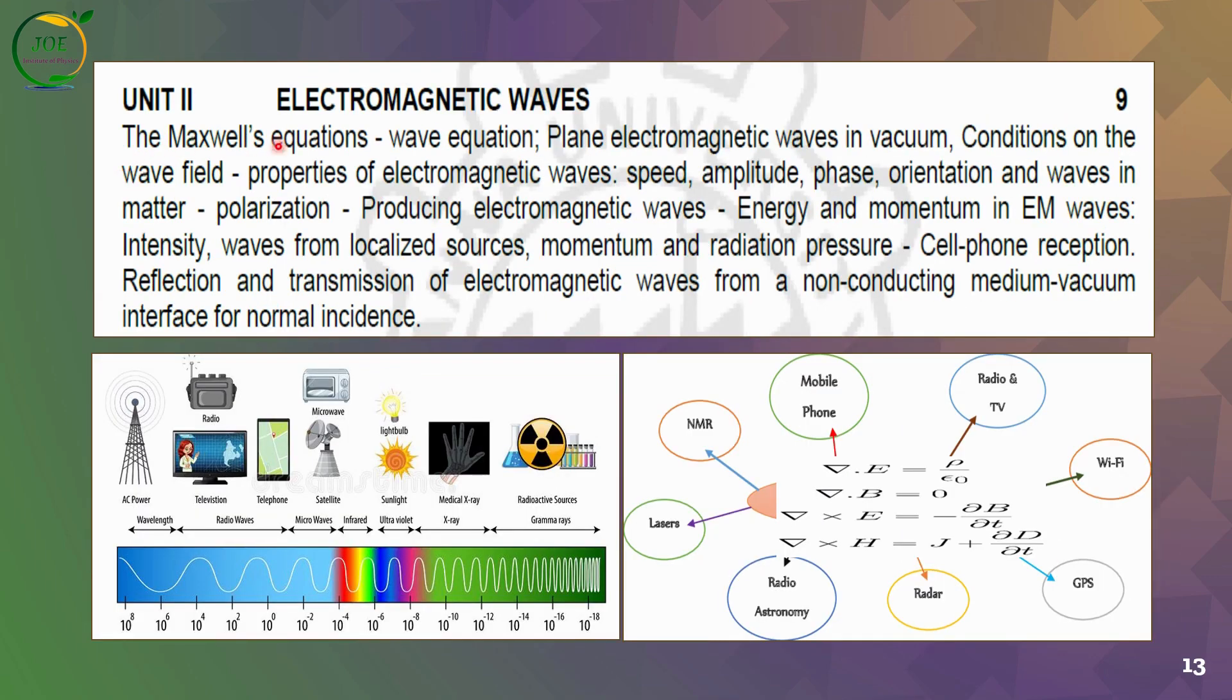The second unit is electromagnetic waves. The electromagnetic spectrum includes radio waves, microwaves, infrared, visible light, ultraviolet, X-rays, and gamma rays. Maxwell's equations describe these waves. Applications include mobile phones, radio and TV, Wi-Fi technology, GPS, radar, radio astronomy, lasers, and nuclear magnetic resonance.